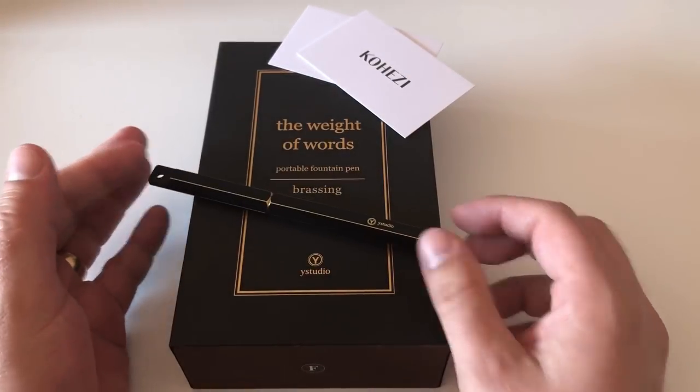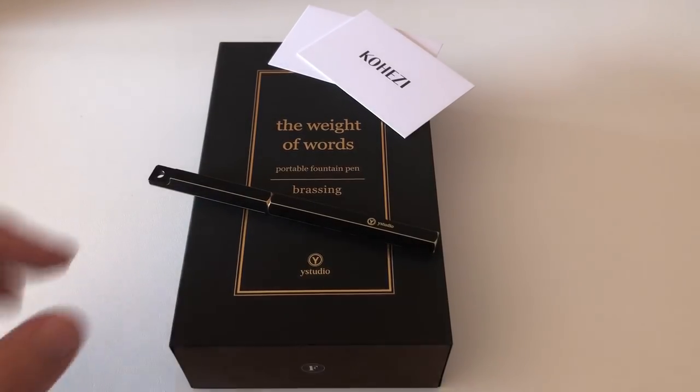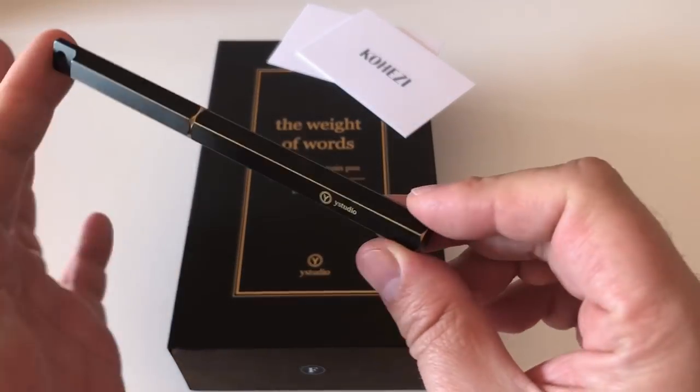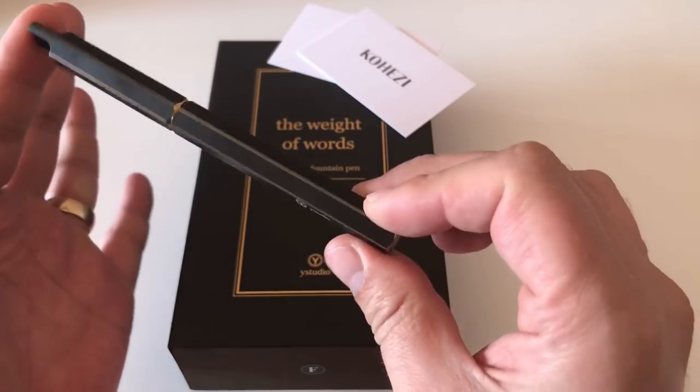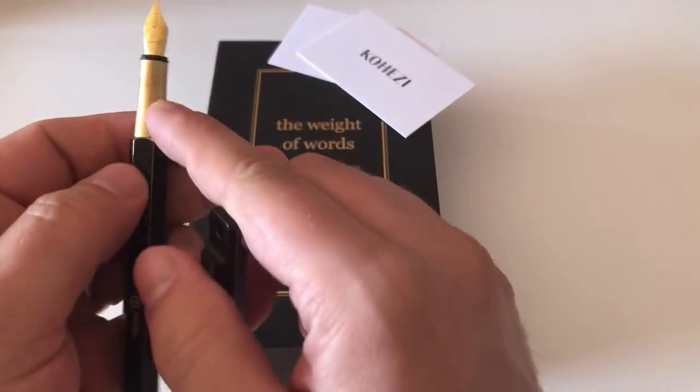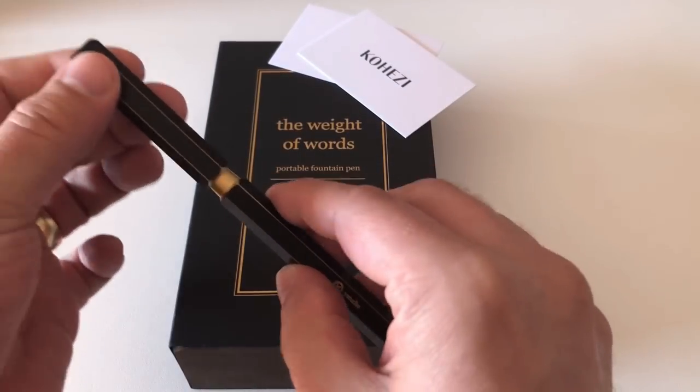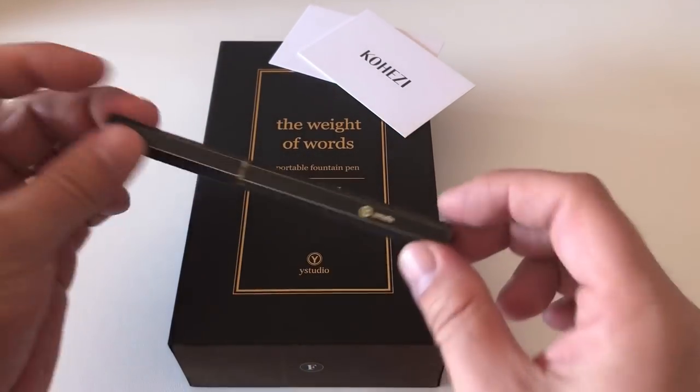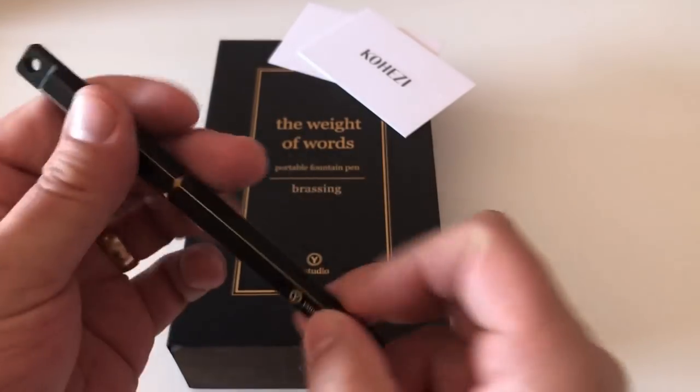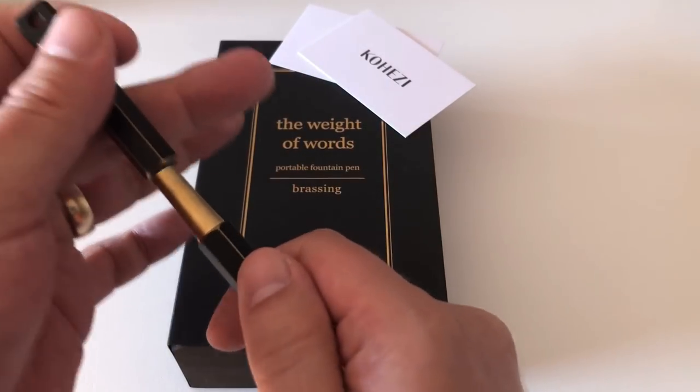The pen we're going to look at is simply the Y-Studio fountain pen. It's a hexagonal pen available in an all brass finish or in a black finish with brass edges and a brass section, and that finish is simply called brassing.